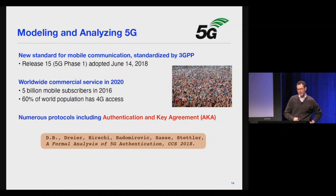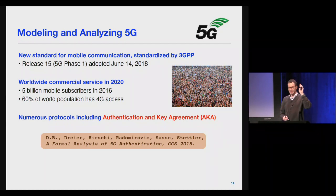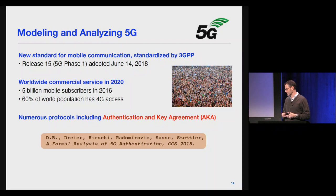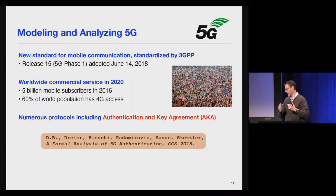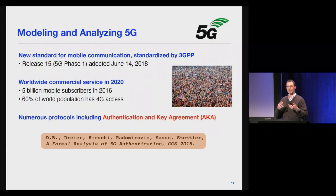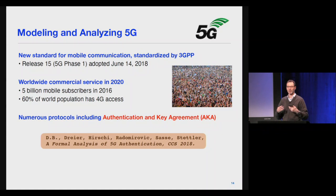Let me now move from Tamarin — that was a quick high-level guide to what a model checker might do — to analyzing 5G. 5G is of course the new standard for wireless communication, standardized by the 3GPP. The first full release of the basic 5G protocol was June 14th, 2018. This is a protocol that is going to have massive uptake — right now most of you are using 4G/LTE, but with about 5 billion mobile subscribers currently, we can expect that and more for 5G, which will also enable the Internet of Things.